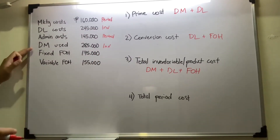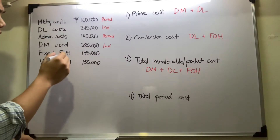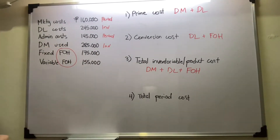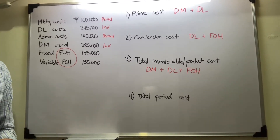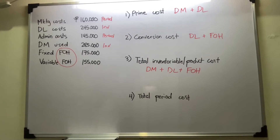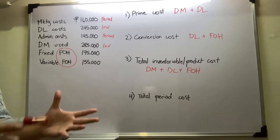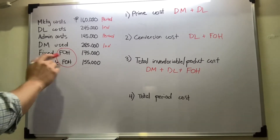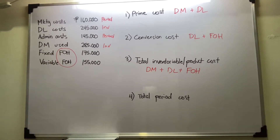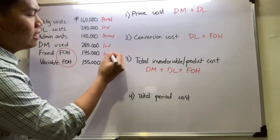For fixed factory overhead and variable factory overhead — examples of factory overhead include rent on the factory building, insurance, and anything related to the factory or helping to produce the finished goods. So both fixed and variable factory overhead would be inventoriable.